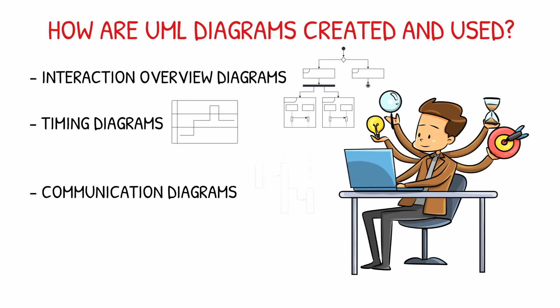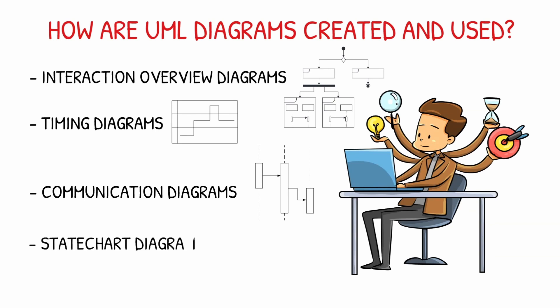Communication diagrams model the interactions between objects in sequence. They describe both the static structure and the dynamic behavior of a system. In many ways, a communication diagram is a simplified version of a collaboration diagram introduced in UML 2.0. State chart diagrams, now known as state machine diagrams and state diagrams, describe the dynamic behavior of a system in response to external stimuli.